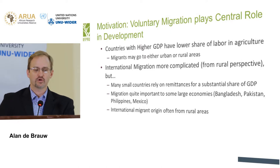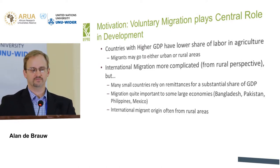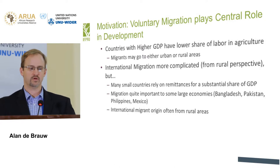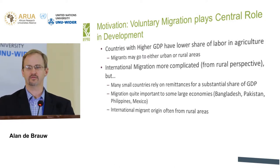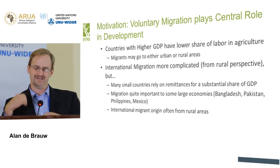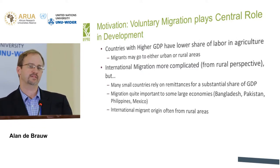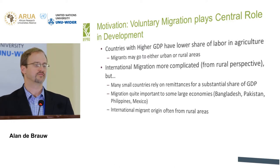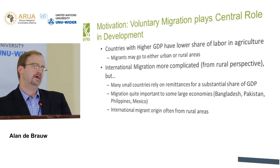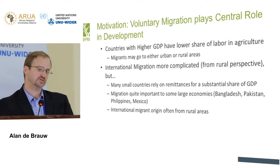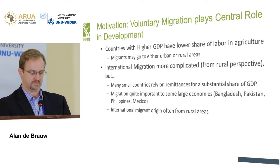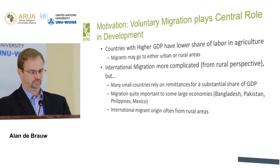So rural-urban migration is a pretty important issue to be thinking about. Second, international migration is more complicated from a rural perspective, but many small countries rely on remittances for a substantial share of GDP. While remittances are not the largest share of GDP for larger economies like Bangladesh, Pakistan, the Philippines, or Mexico, they are an important source of income. And the origin of international migrants is often from rural areas.